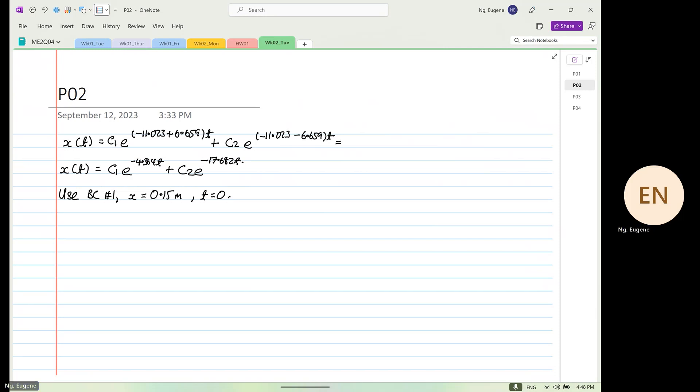So over here, we are going to substitute into equation number one. So this is equal to 0.15 is equal to c1 plus c2, since e to the power of 0 is equal to 1. So over here, you can write an expression where c1 is equal to 0.15 minus c2. So this is your equation number two.